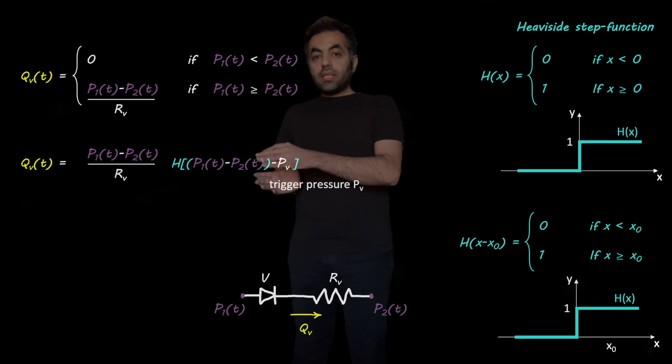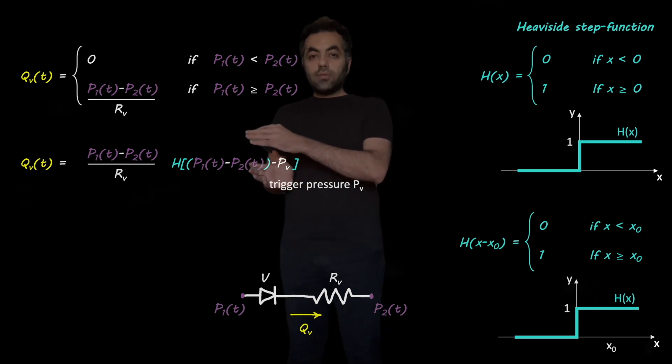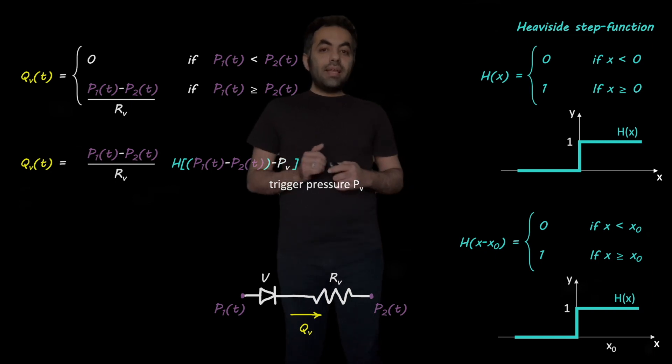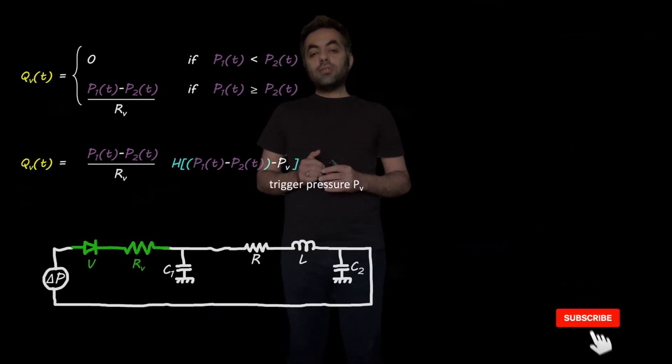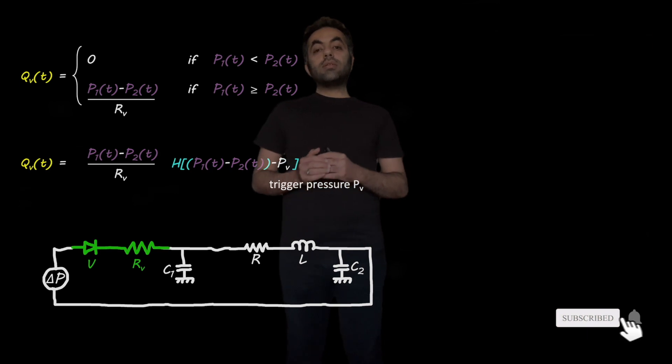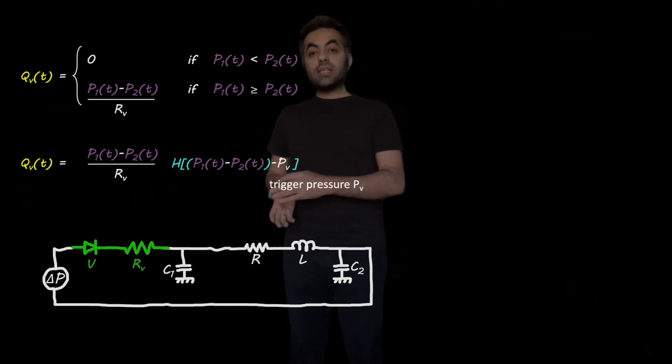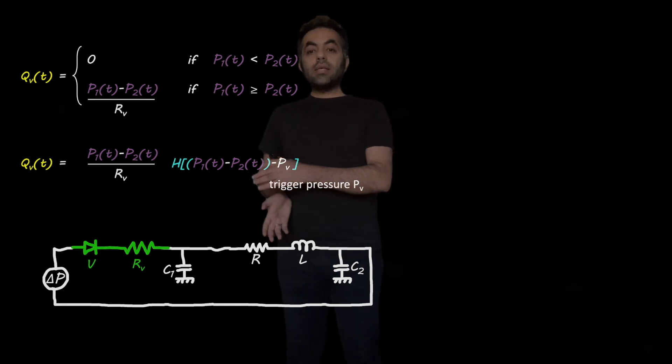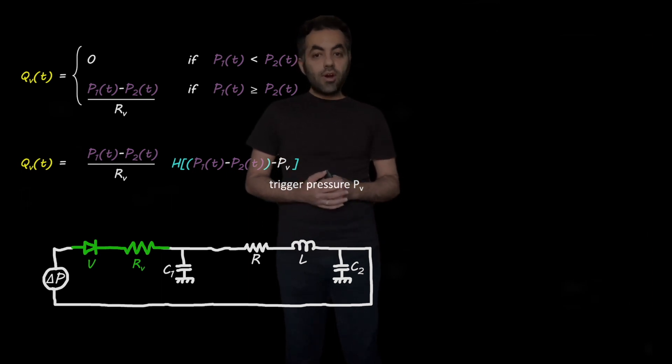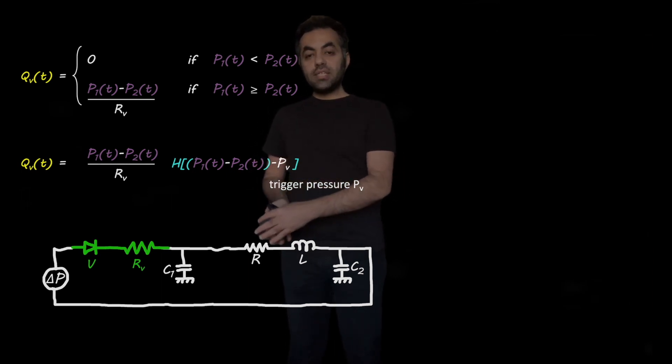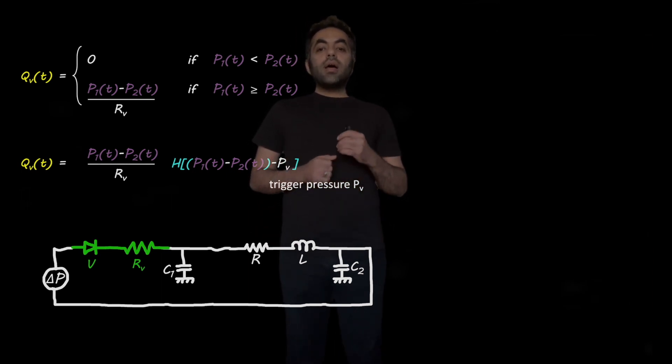This is the main equation that we are going to use in order to model valves in the cardiovascular system. So, in the next video, we are going to use this equation to solve a circuit, a zero-D model of the cardiovascular system such as this one, including a valve and some other components such as resistors.